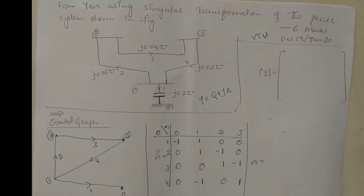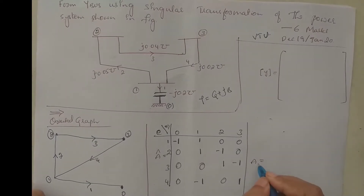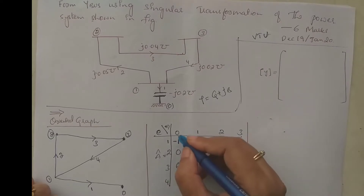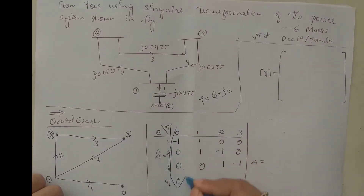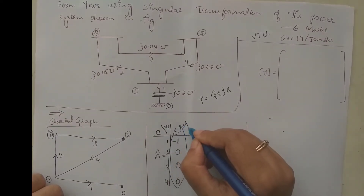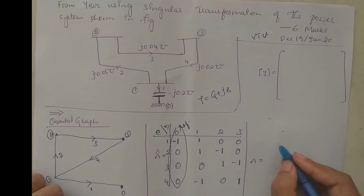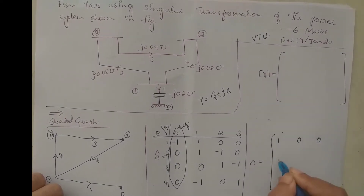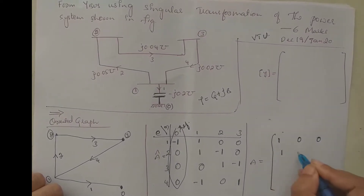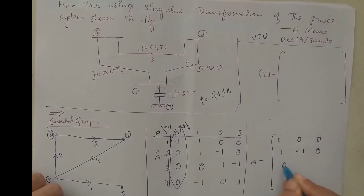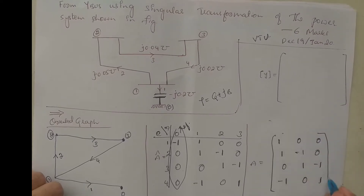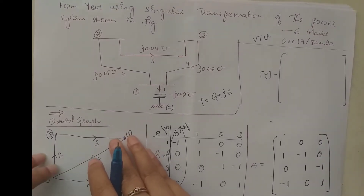We obtain matrix A, the bus incidence matrix, from the element-node incidence matrix by deleting the column corresponding to the reference node (node 0). After deletion, the matrix A becomes: row 1: [1, 0, 0]; row 2: [1, -1, 0]; row 3: [0, 1, -1]; row 4: [-1, 0, 1].